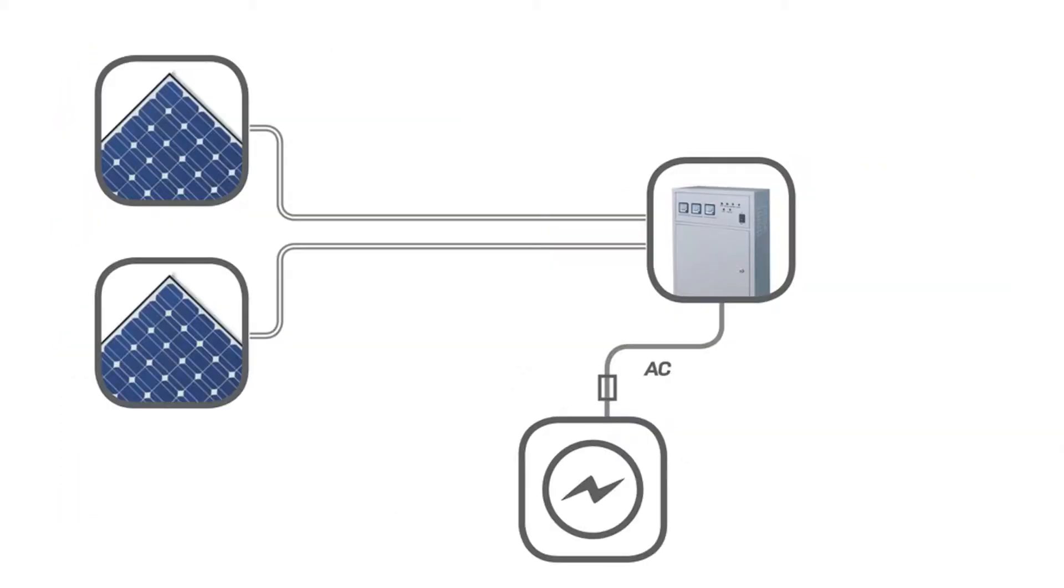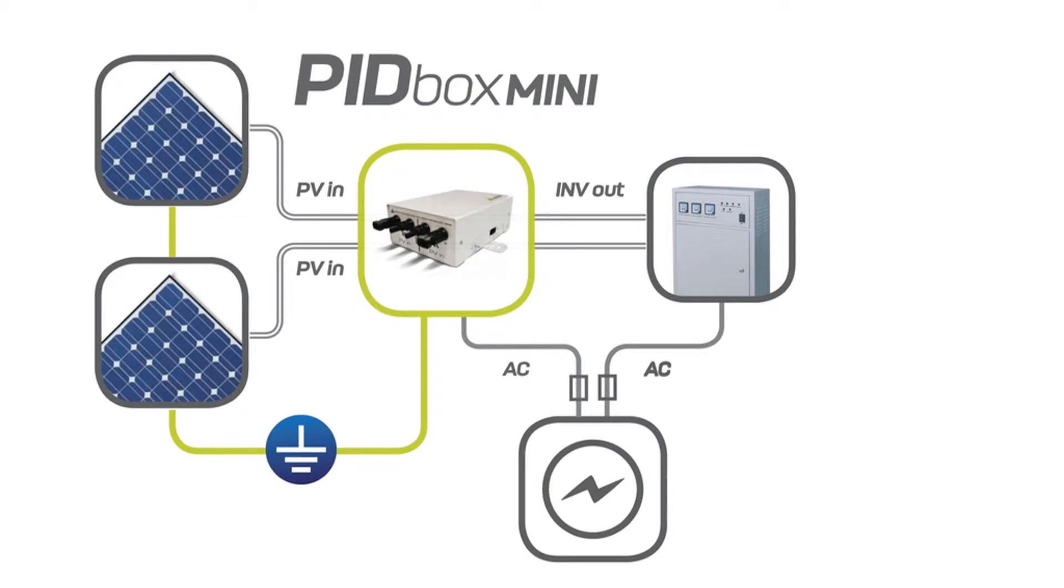The PID Box Mini is installed between the solar panels and the inverter and caters for both the indoors with its PID Box Mini indoor and the outdoors with its PID Box Mini outdoor.